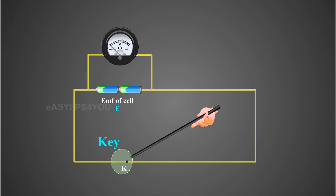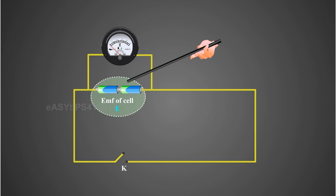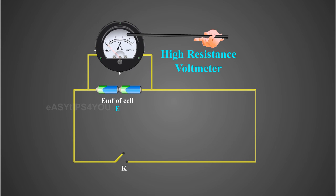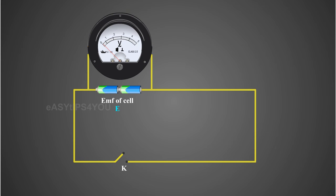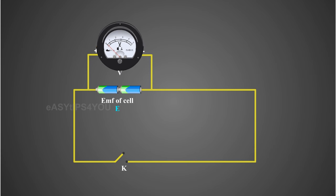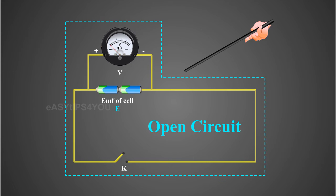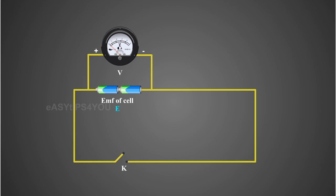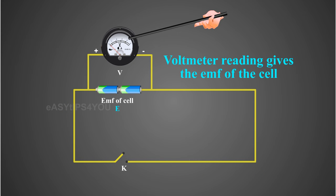With the key open, the EMF of the cell E is found by connecting a high resistance voltmeter across it. Since the high resistance voltmeter draws only a very feeble current for deflection, the circuit may be considered as an open circuit. Hence, the voltmeter reading gives the EMF of the cell.